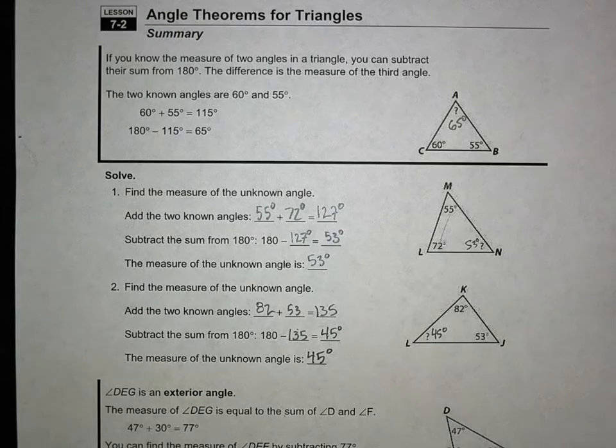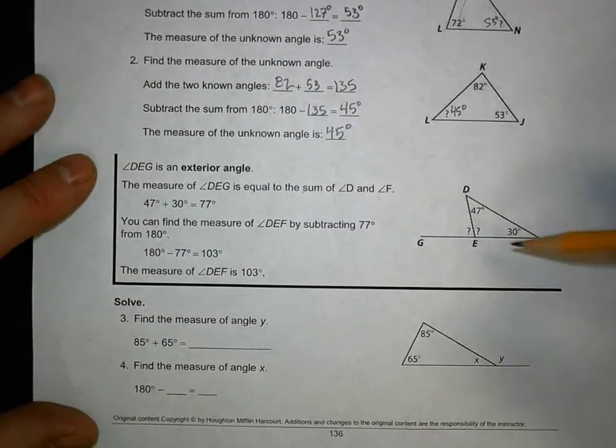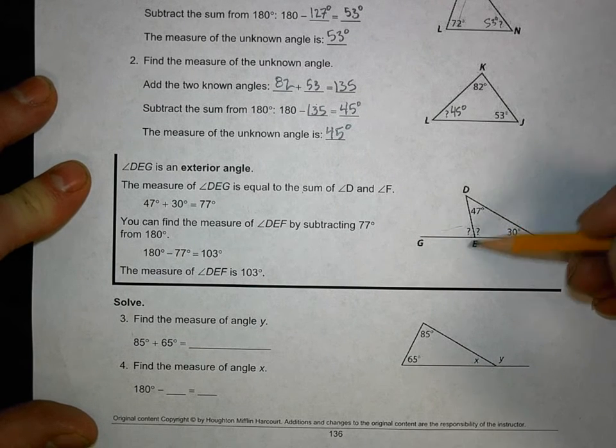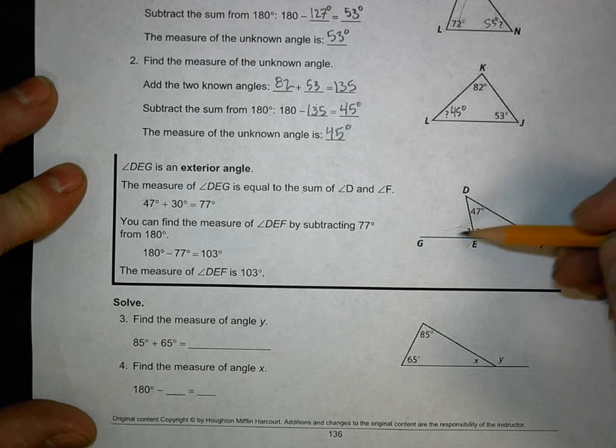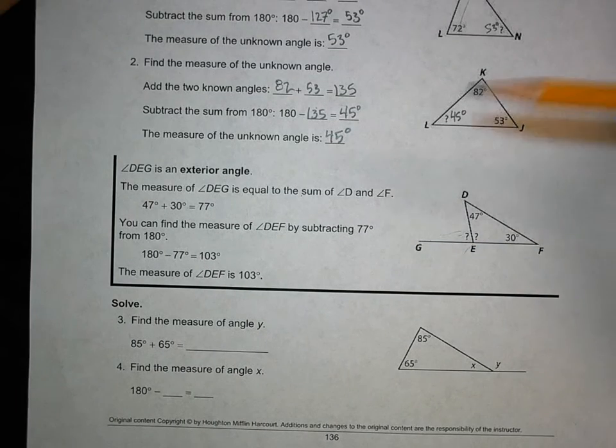So the measure of the unknown angle is 45 degrees. All right, so that's triangle sum theorem on this simple stuff. Let's look at a little more complex when we're dealing with interior and exterior angles of triangle. Remember, we have exterior angles, but we don't play with that remote interior angle. We only play with exterior angles.